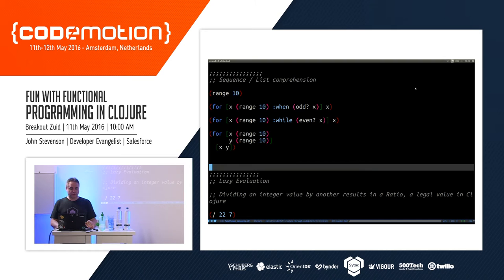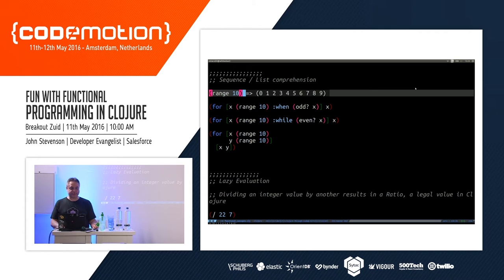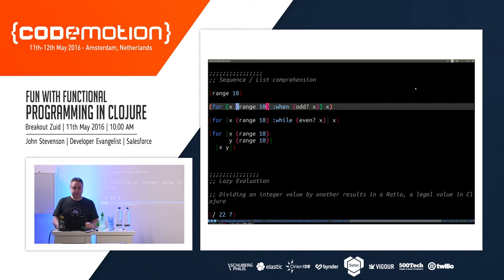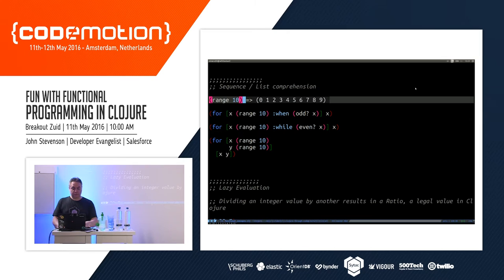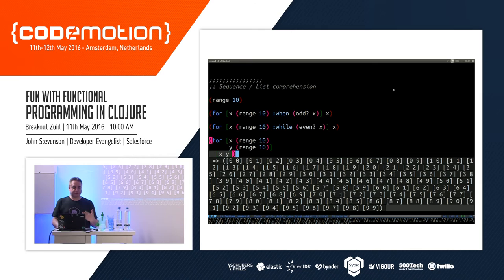Let's look at some higher order functions. You've got things like sequence and list comprehension, so you can generate data very easily and filter through it. I'm generating a range of numbers from zero to nine, then filtering them — when they're odd I return those values, when they're even I ignore them. When I evaluate that, I just get the odd numbers out of the list.